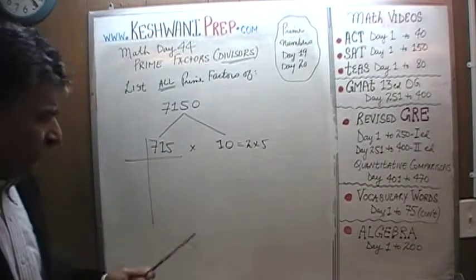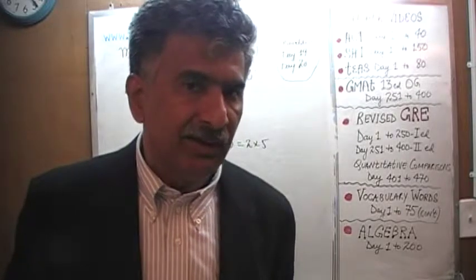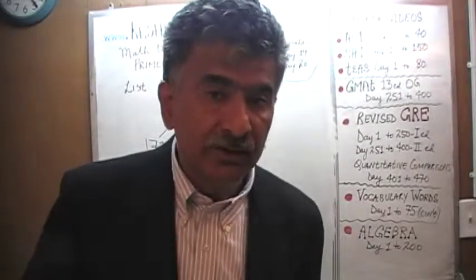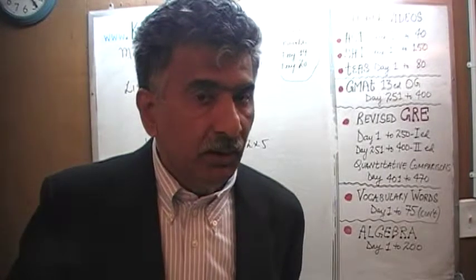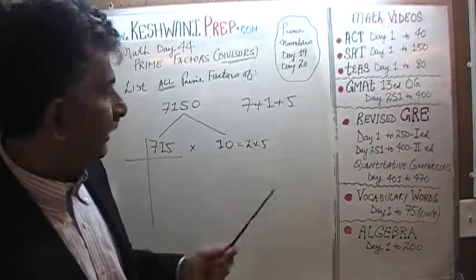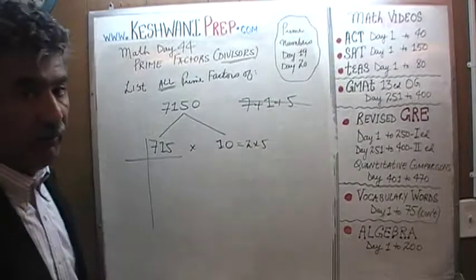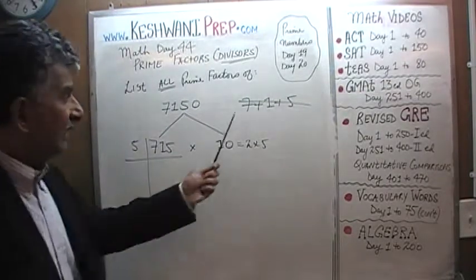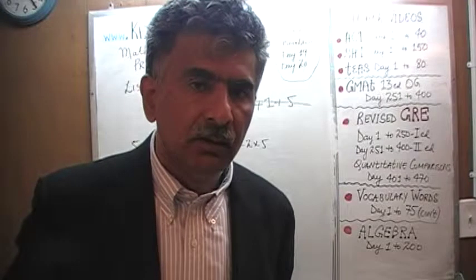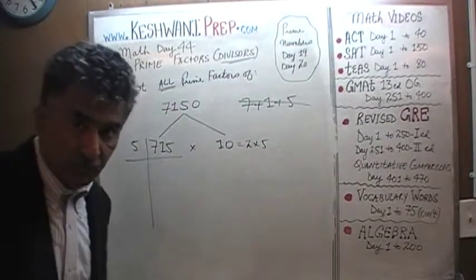Now let's work on 715. It ends in a 5 — should we start dividing by 5? The answer is no. We always look for the smallest prime number that goes evenly into this number. Obviously we can't divide by 2 — it's not an even number. Let's see if 715 is divisible by 3. A number is divisible by 3 if the sum of its digits — 7 plus 1 plus 5 — is divisible by 3. 7 plus 1 is 8, and 8 plus 5 is 13. 13 is not divisible by 3, so we have no choice but to start with 5.